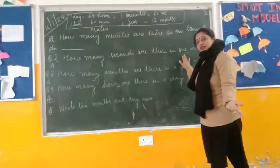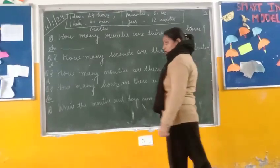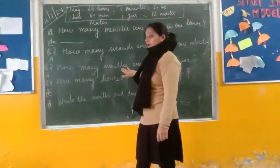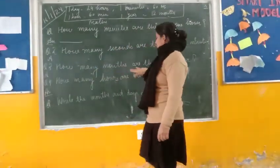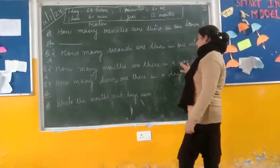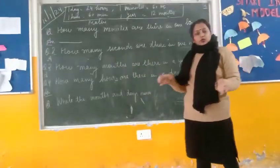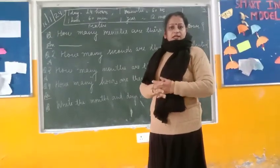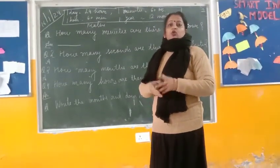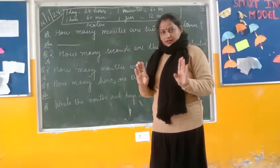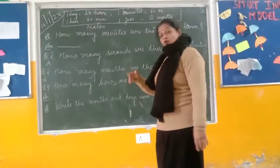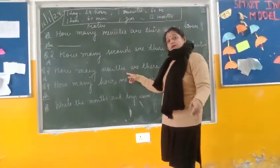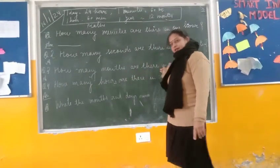In one minute, how many seconds are there? You will write: How many months are there in a year? I think everybody knows the months' name. There are 12 months in a year. Don't write the name of the months — only write down how many months are there in one year.